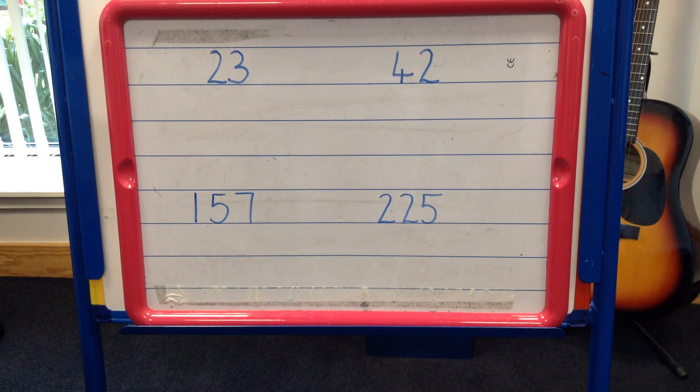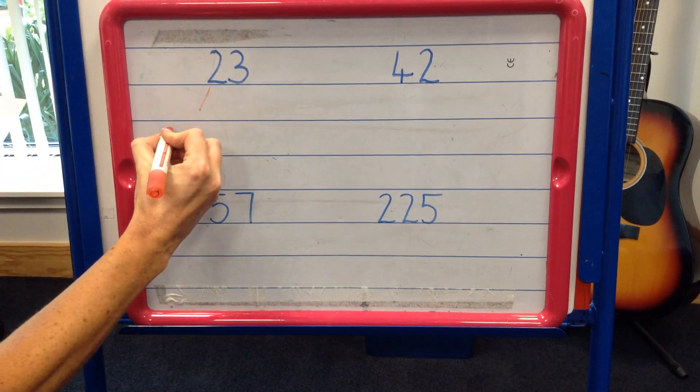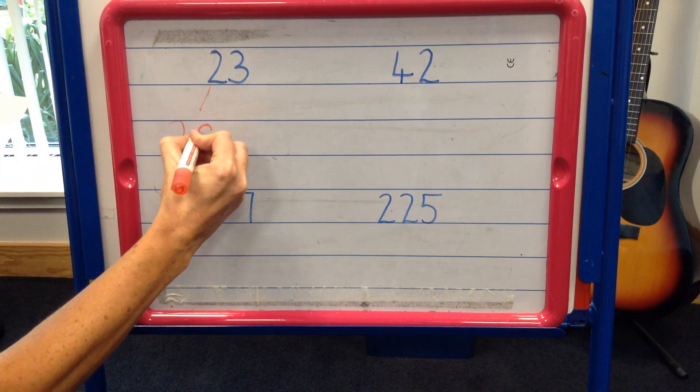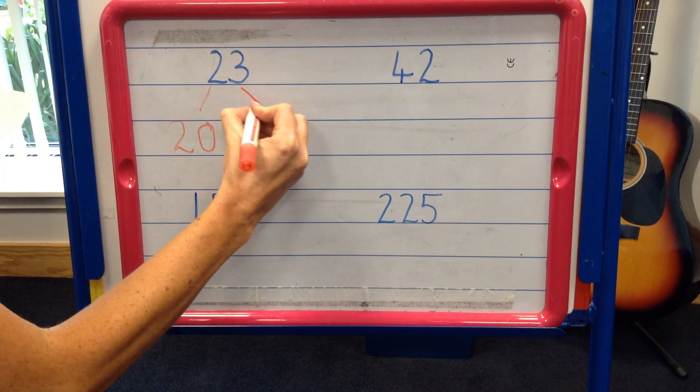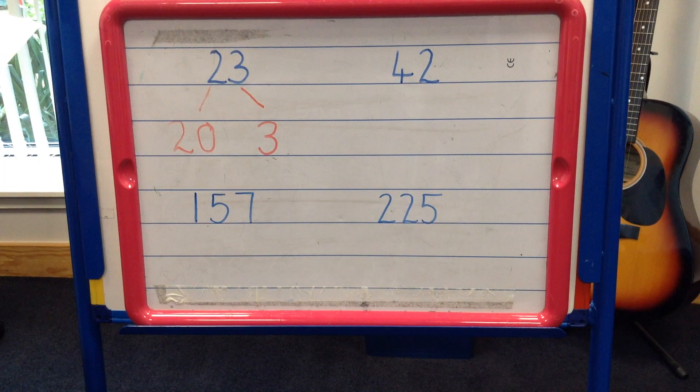Let's look at an example. Take the number 23. If we partition this number, it becomes 2 tens and 3 ones. You may have heard ones being called units.